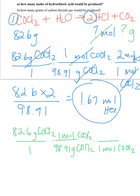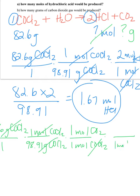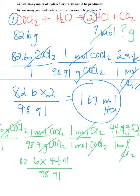We'll start another problem very much the same way. 82.6 grams of COCl2 — we will cancel and go to moles so that we can do our stoichiometry. We'll cancel those moles of COCl2 and go to moles of carbon dioxide, because that's what we're interested in. These are in a one-to-one mole ratio. Now we're not done, because we don't want moles of carbon dioxide — we would like grams. So cancel those moles of carbon dioxide and go to grams. The molar mass of CO2 is 44.01. Multiply across the numerators, multiply across the denominators, and divide. You get 36.7 grams of CO2.